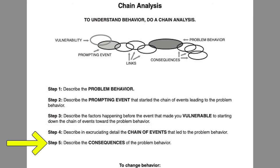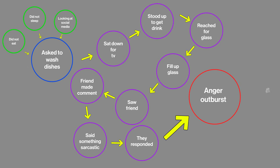Step five is to describe the consequences of the problematic behavior. After lashing out, what were the consequences? Perhaps the friendship was severed, perhaps it became awkward, or perhaps there was a physical fight. This will be unique to each situation, but you want to clearly lay out the consequences. Once we've done steps one through five, we have a very clear depiction of the problematic behavior, the vulnerability factors, the prompting events, the events that led to the problem behavior, and the consequences. When this is laid out on paper, it's really helpful so we can then identify exactly where changes need to be made — and this is why DBT wants you to be in excruciating detail, so you have lots of opportunities to identify where change could take place.